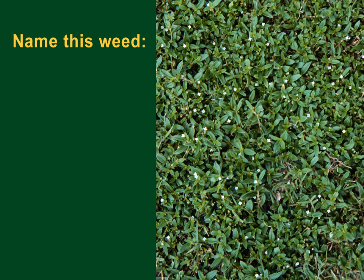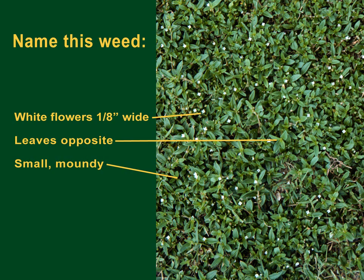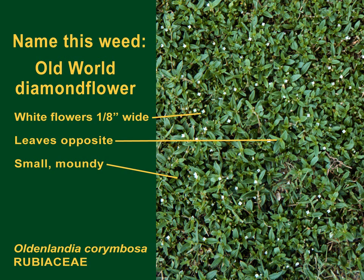A tiny weed with a moundy appearance has tiny white flowers, star-like in appearance, and opposite leaves. It is Old World Diamond Flower, which is in the Rubiaceae, or the coffee family. We'll come back to this family.